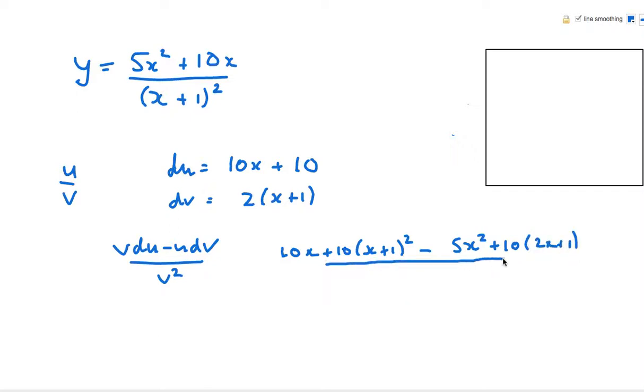This is also the reason why it's good to always do v du first because we're going to use v du first for the quotient rule, so if you use it for the product rule, you'll never get confused which one's first. V squared, that's going to be x plus 1 squared squared, so that's x plus 1 to the 4.